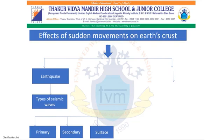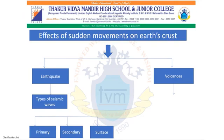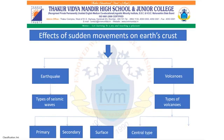Now let us look at volcanoes. A volcano is when hot, solid, liquid and gaseous materials are thrown out from the mantle of the earth onto the surface of the earth — this process is called volcanic eruption. There are two different types of volcanoes: the first is a central type or conical volcano, and the second is a fissure type of volcano.